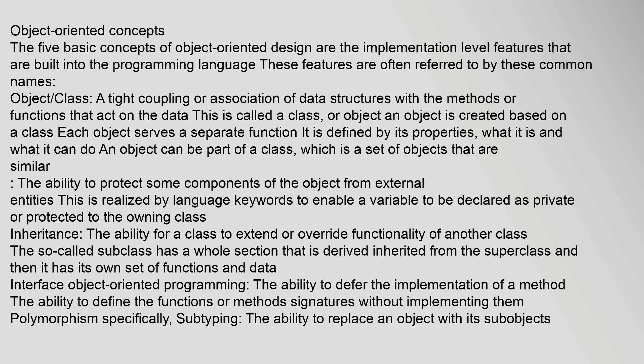Interface in object-oriented programming: the ability to defer the implementation of a method — to define the function or method signatures without implementing them. Polymorphism, specifically subtyping: the ability to replace an object with its subobjects — the ability of an object variable to contain not only that object but also all of its subobjects.